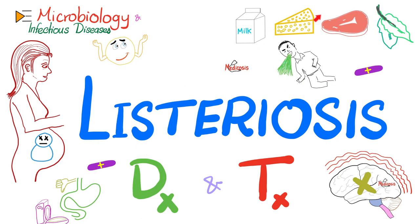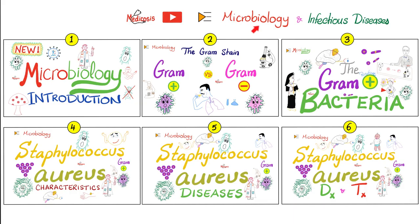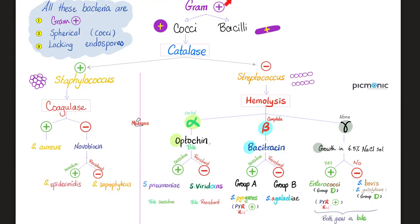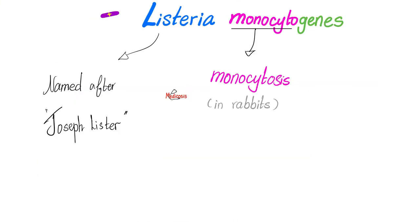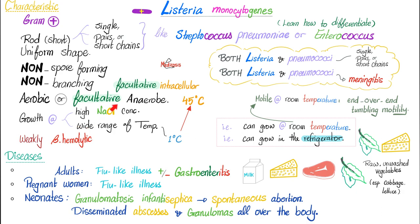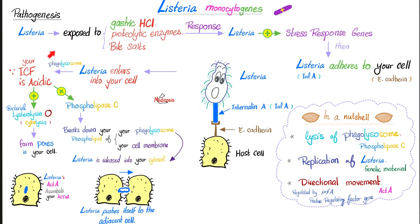Food poisoning and gastroenteritis — check. Granulomatosis infantiseptica — also check. Please watch the videos in this playlist in order. Listeria is a gram-positive rod, non-spore-forming, aerobic, and motile. This is why they call it Listeria. These are the characteristics of Listeria and these are the diseases caused by Listeria, as we have discussed in previous videos. Pathogenesis is here.